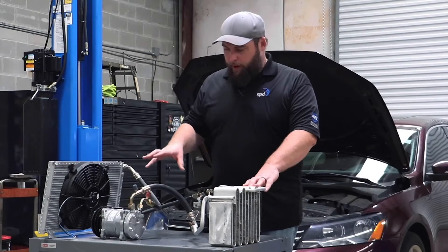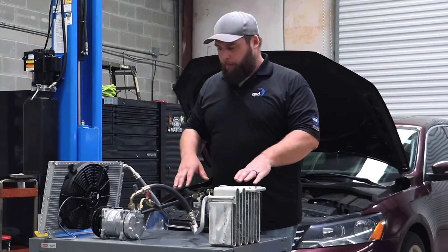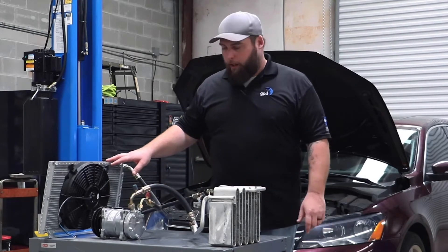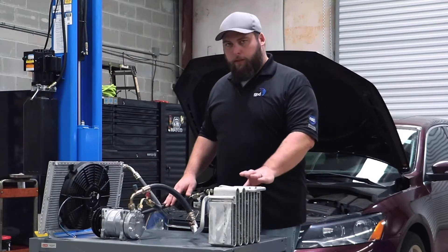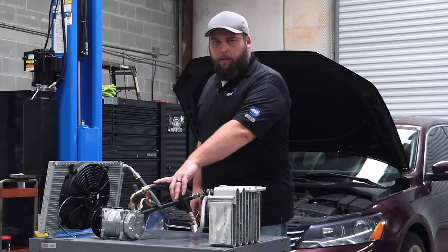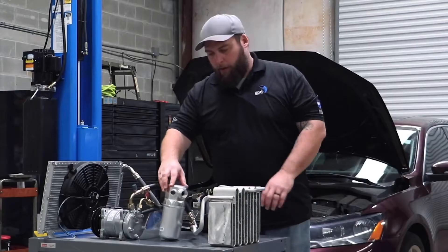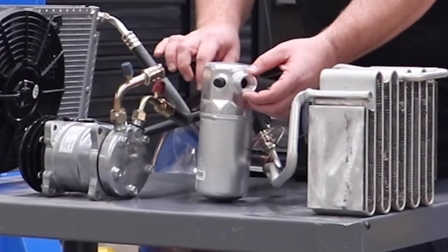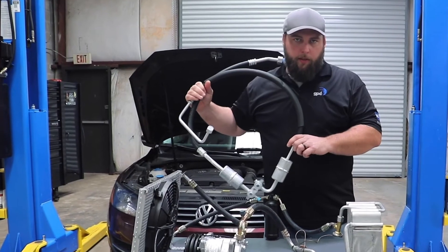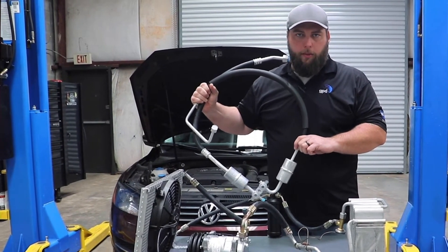There are a few different setups and variations of how the hoses are connected to different components in the AC system. This is a basic setup: discharge line from compressor to condenser, liquid line from condenser to evaporator, and suction line from evaporator back to the compressor. In an accumulator orifice tube setup, you have an accumulator between your evaporator and your compressor, so you actually have two separate hoses.